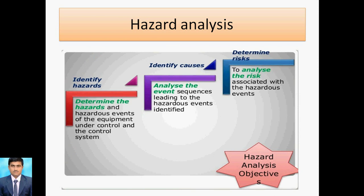Now we move to hazard analysis. First, we identify the hazards — we can determine the hazard and hazard events of the equipment under control and control systems. This is the methodology for analyzing hazards. Then we identify the causes — the sequence of events leading to the hazardous event identified. Then we determine the risk associated with hazardous events. So the three objectives are: identify hazards, identify causes, and determine the risk.